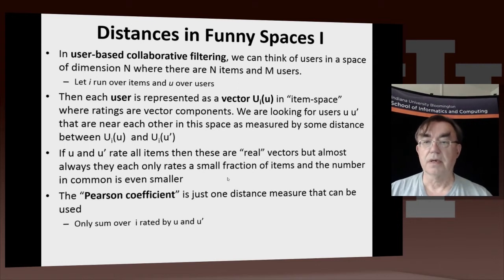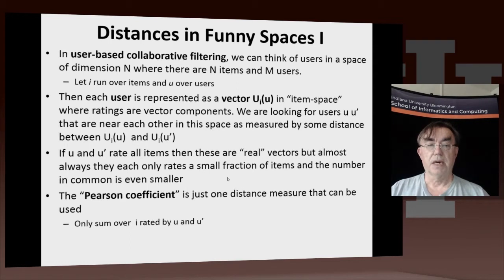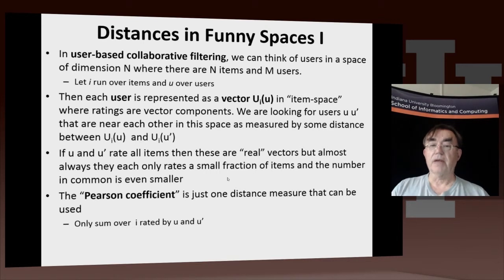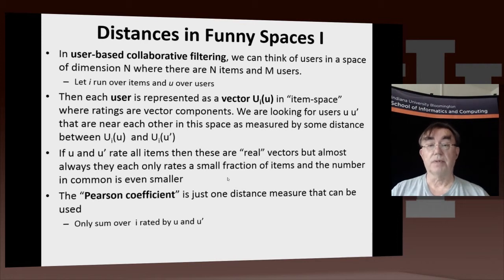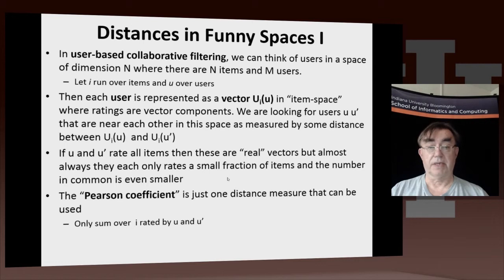The users are, say, the customers at Amazon, and the items are the things Amazon sells. Let's suppose we have N items and N users. So one way of thinking of this problem is in a space which has dimension N — a space which has coordinates, with one coordinate for every item, and the number of points in the space equal to the number of users. Every user is represented by a vector in the space, where that vector has a component for every item.